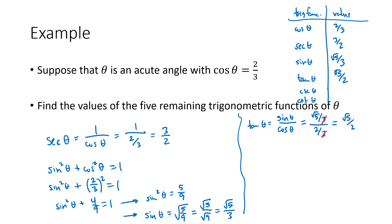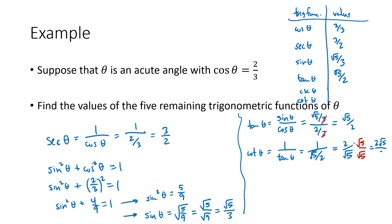For example, we know that cotangent is the reciprocal of tangent. So cotangent of theta is one divided by tangent of theta — that's one divided by square root of five over two. That just flips the fraction over and we get two over the square root of five.